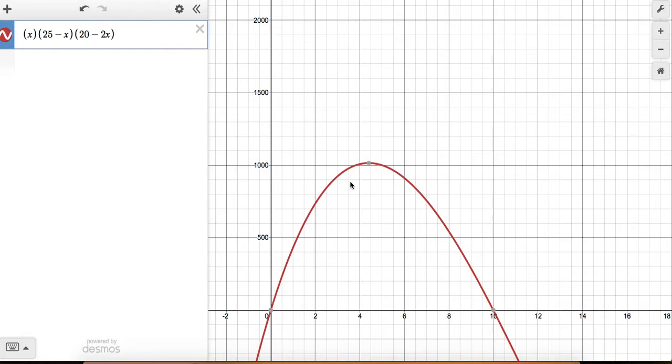So here's the equation for the box without a top. We end up with x as our height, our width is 25 minus x, and then our length is 20 minus 2x because we cut off x from both sides.